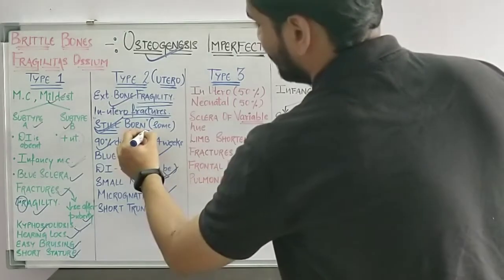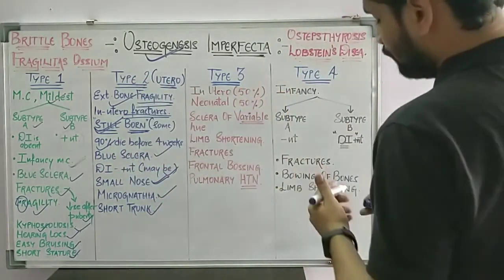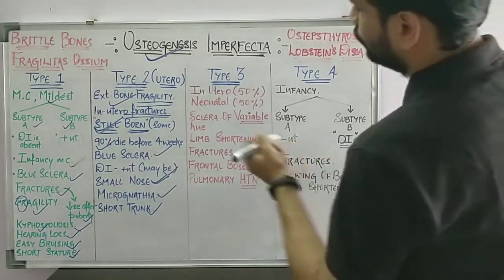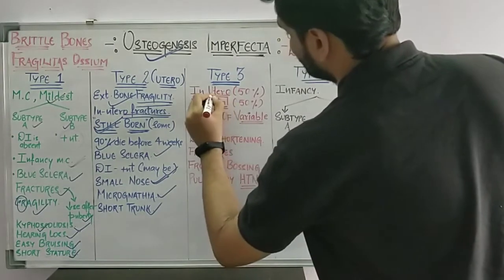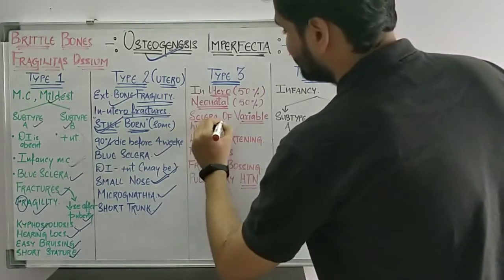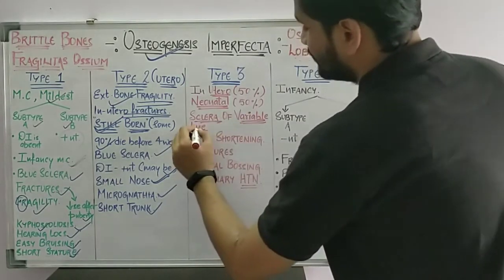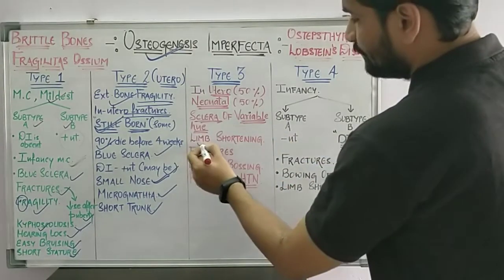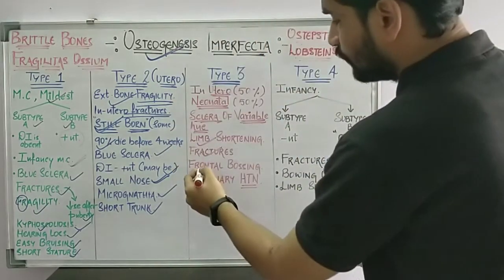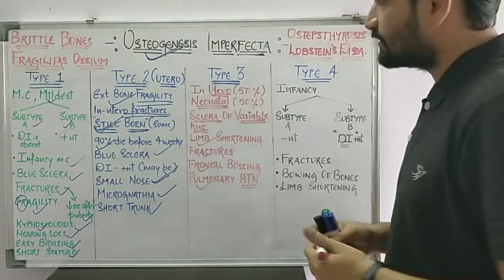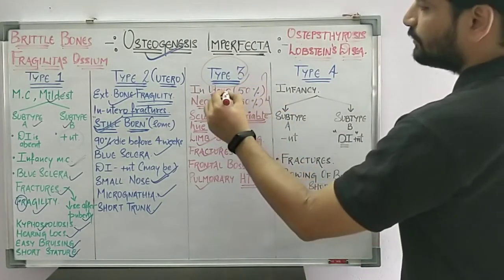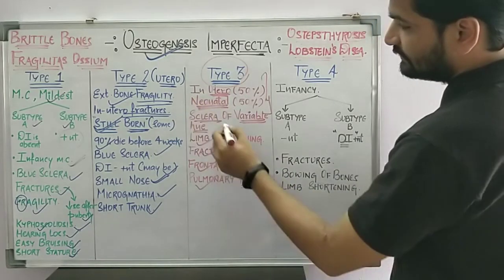Moving on to Type 3 — this is seen in utero as well as neonatal: 50% of cases are in utero and 50% are neonatal. The sclera shows variable shades of color. There is limb shortening, fractures, and frontal bossing. Some cases of pulmonary hypertension are also seen.